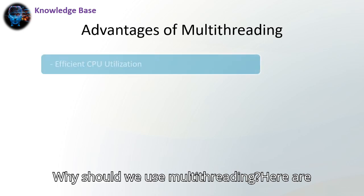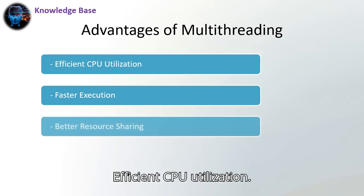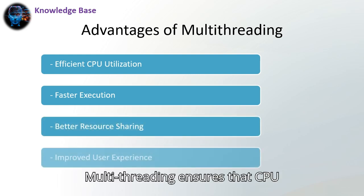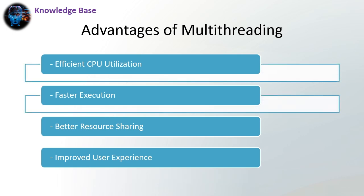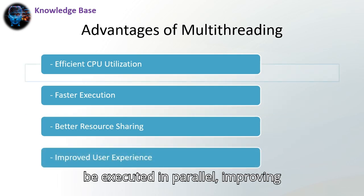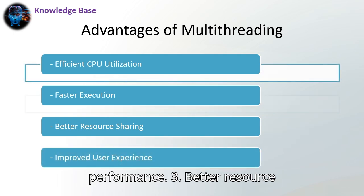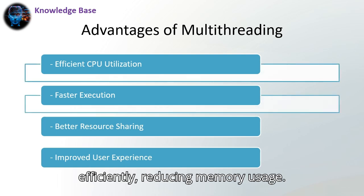Why should we use multithreading? Here are some key benefits. 1. Efficient CPU utilization: multithreading ensures that CPU resources are used optimally. 2. Faster execution: tasks can be executed in parallel, improving performance. 3. Better resource sharing: threads share resources efficiently, reducing memory usage.